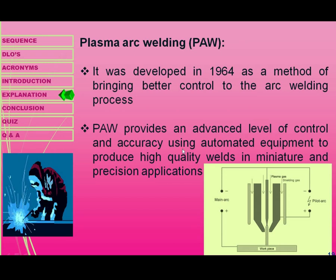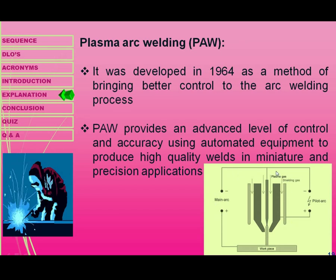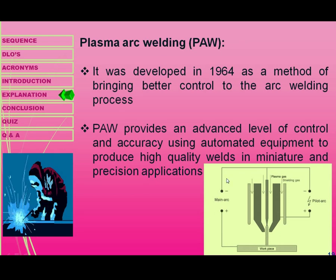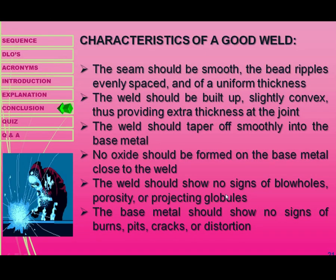Plasma arc welding was developed in 1964 as a method of bringing better control to the arc welding process. It provides an enhanced level of control and accuracy using automated equipment to produce high-quality welds in miniature and precision applications. The main arc and pilot arc are both responsible for creating plasma, and shielding gas is provided through the plasma gas supply.